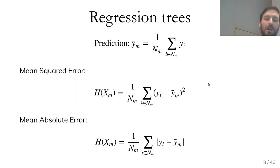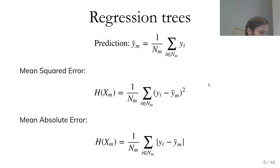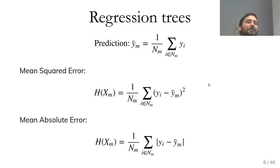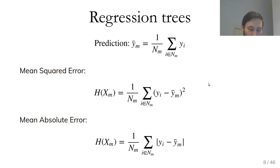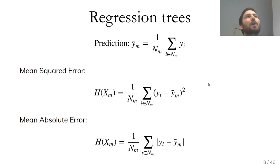This can also be applied to regression. For regression, the prediction is just the average instead of voting. For the impurity criterion, two are frequently used: mean squared error and mean absolute error. A leaf is more pure if all points are close to the mean. If you split, the mean becomes a better approximation to the response in each point. Mean squared error is more sensitive to outliers; mean absolute error is the more robust version.